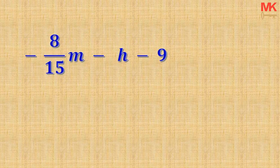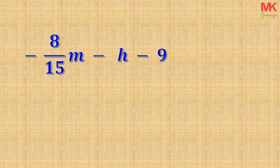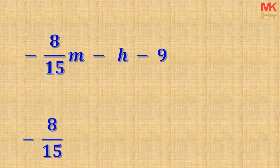Now, if we have another expression — negative 8 over 15 M, take away H, take away 9 — we will neglect the negative 9 because it is not attached to any letter. Our concentration will be on the terms that have letters, so there are two letters here: M and H. For the M term, what number is in front of the letter M? Obviously, we have negative 8 over 15 in front of the letter M, so the coefficient of the letter M is negative 8 over 15.